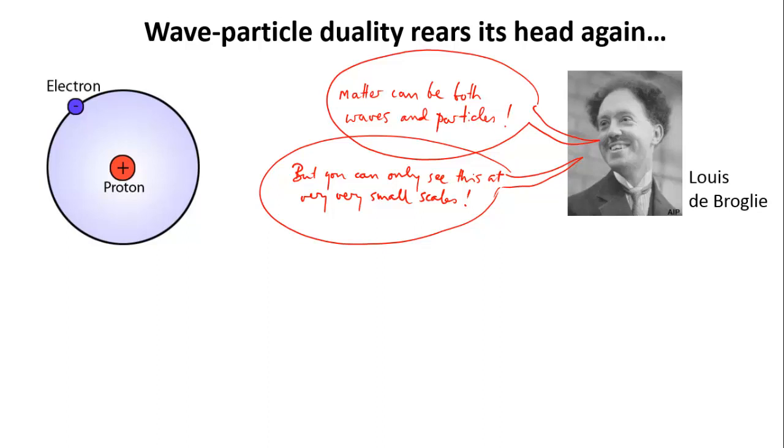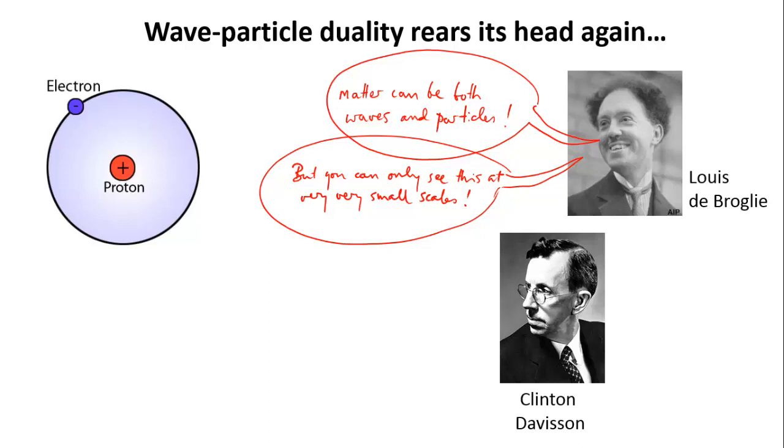Three years later, in 1927, this was shown experimentally. In the US, Clinton Davisson and his colleague Lester Germer demonstrated it by firing a beam of electrons at a crystal of metal, and observing that the particles, the electrons, produced a diffraction pattern, exactly as if they were a wave.